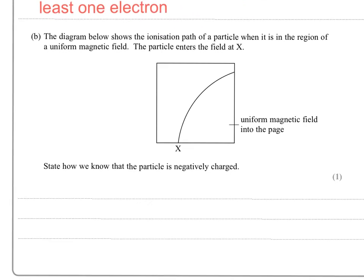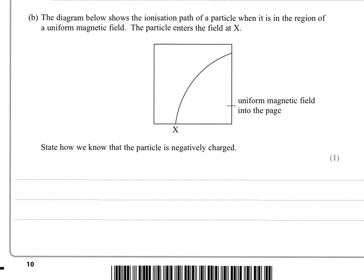Part B then, the diagram shows the ionization path of a particle when it is in the region of a uniform magnetic field. The particle enters the field at X and we've got uniform magnetic field here into the page. State how we know that the particle is negatively charged.